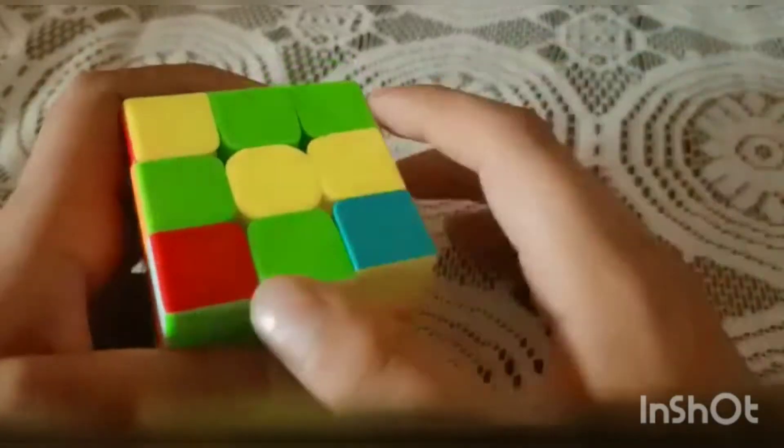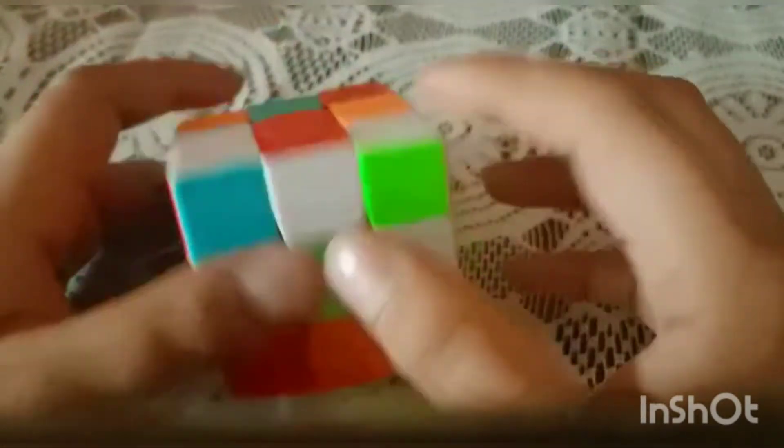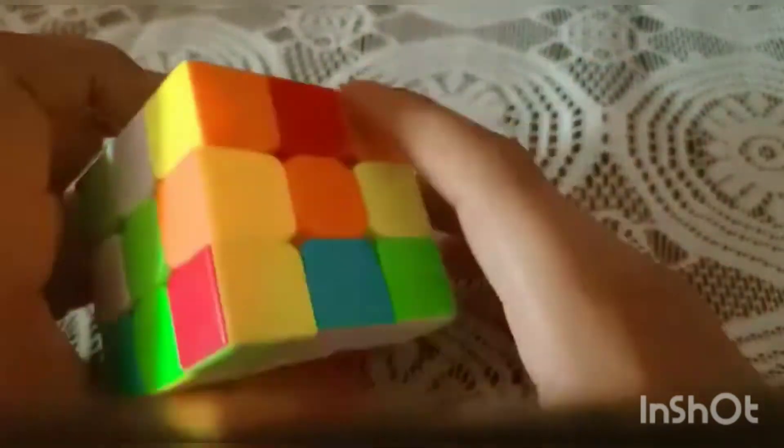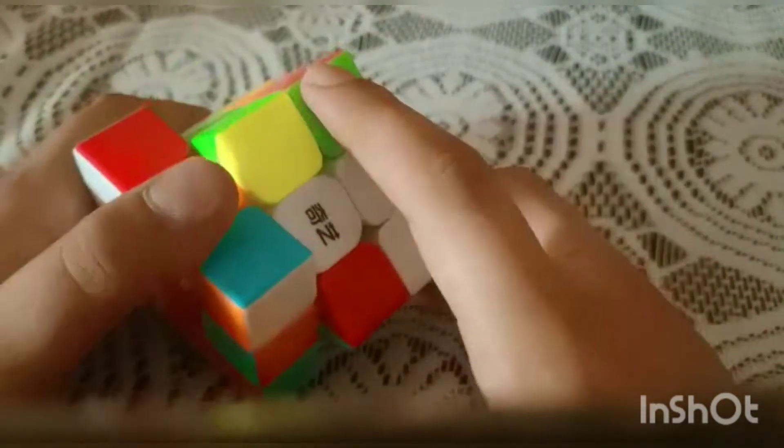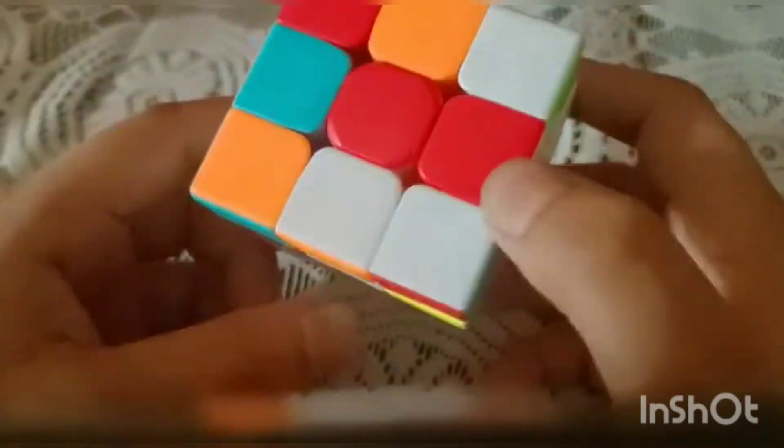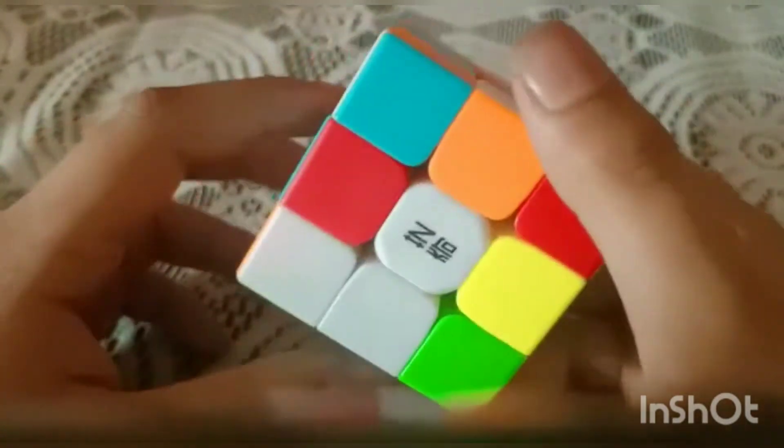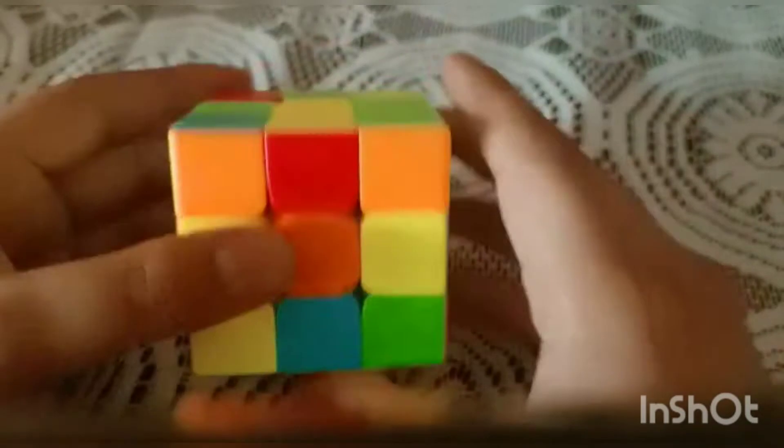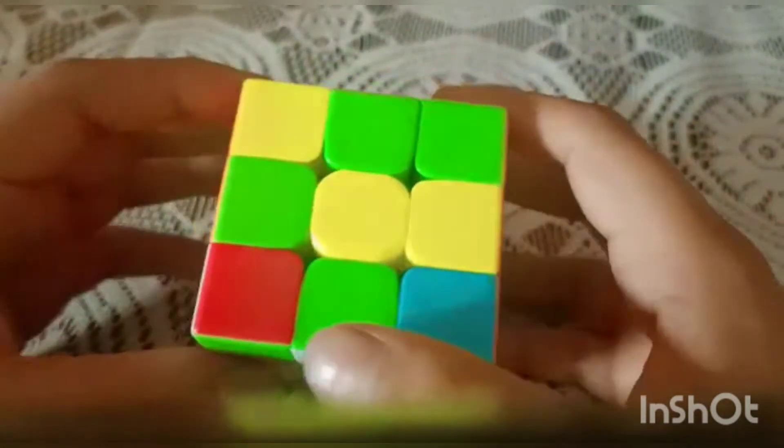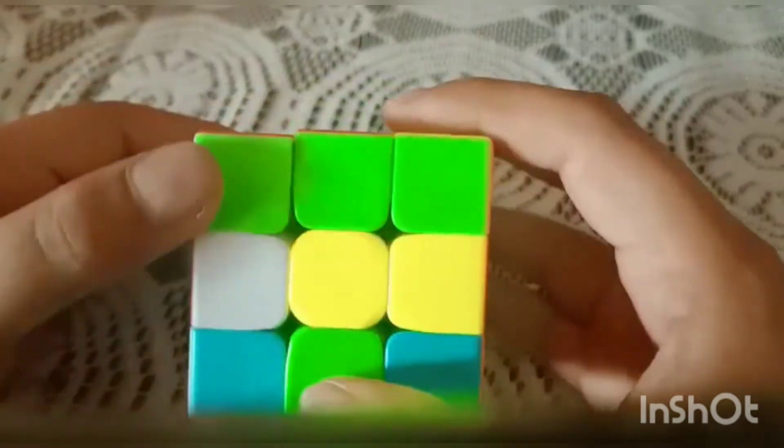So guys, I have jumbled the cube and you can see I have a white piece over here, then over here, then over here, and then I have it over here. So I have four: one, two, three, and four.